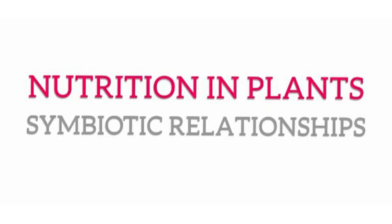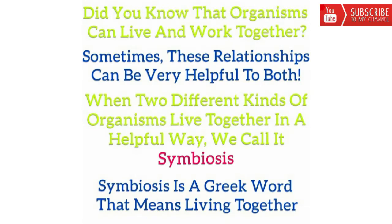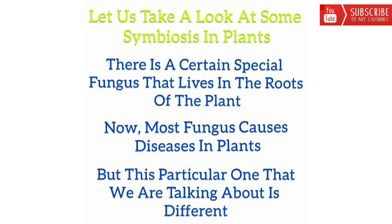Nutrition in Plants: Symbiotic Relationships. Did you know that organisms can live and work together? Sometimes these relationships can be very helpful to both. When two different kinds of organisms live together in a helpful way, we call it symbiosis. Symbiosis is a Greek word that means living together. Let us take a look at some symbiosis in plants.